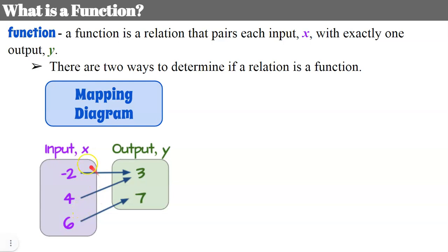Students often get confused because negative 2 and 4 have the same output of 3, but that's not what our definition says. Our definition says as long as each input has one output, it's a function. This input has one output, this input has one output, this input has one output. So when you're using a mapping diagram, you're looking to see if any input has two arrows going to different outputs.